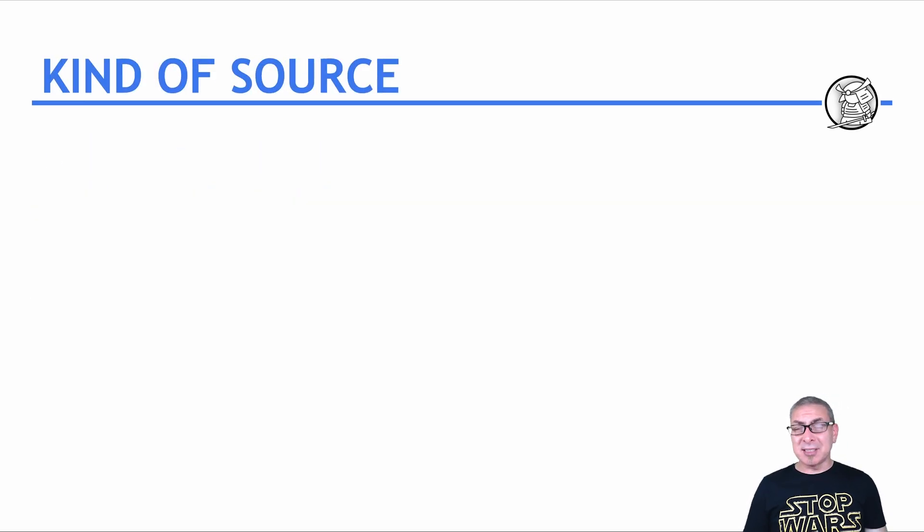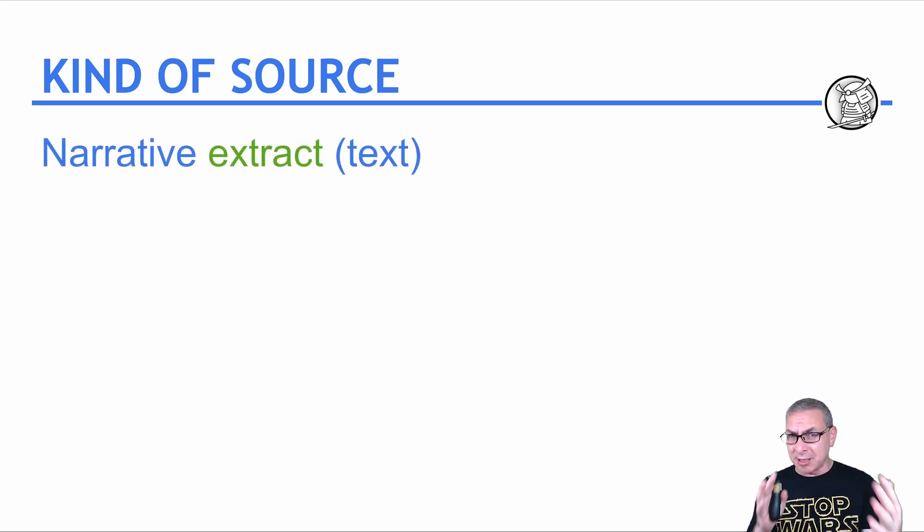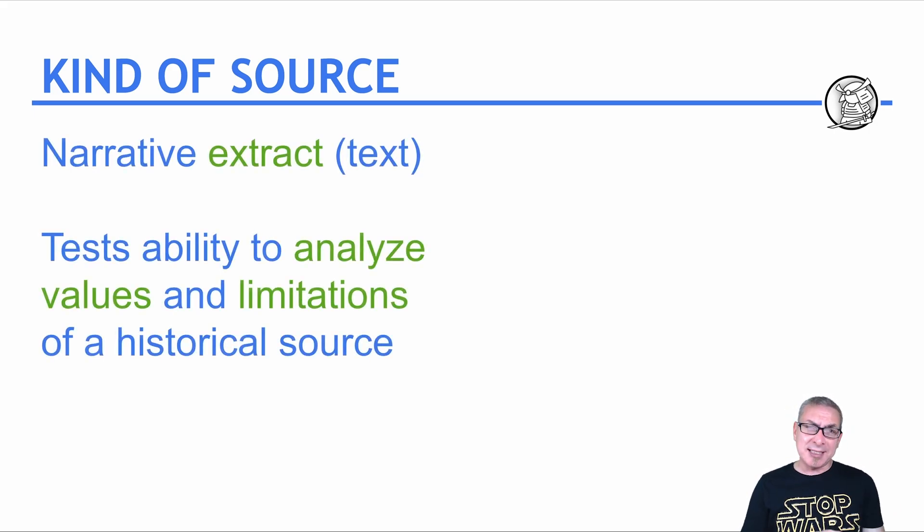So the kind of source you're going to see is always a narrative extract. It's a small piece of text from a larger piece of text. And basically, it's testing your ability to analyze the values and the limitations of the source to the historian. And it's worth four points.